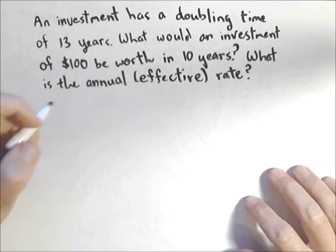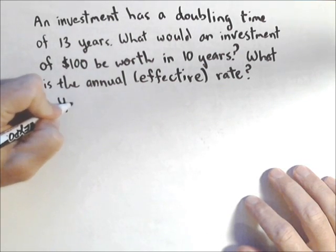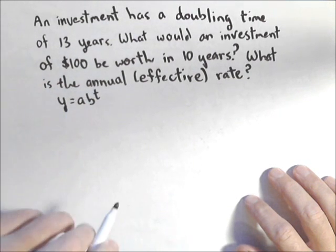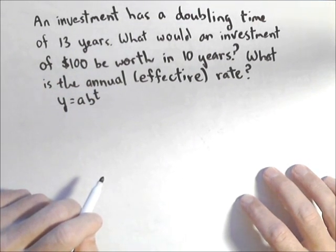This is going to be an exponential model, and it turns out if we use this form, A times B to the T, there's a really slick way of dealing with doubling time.